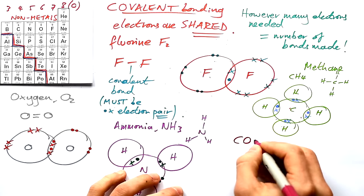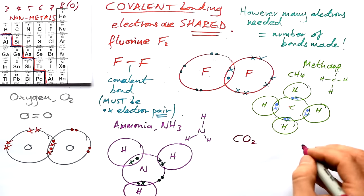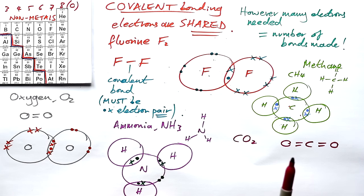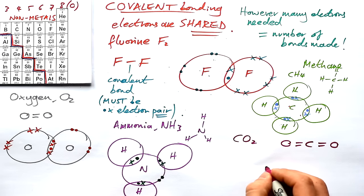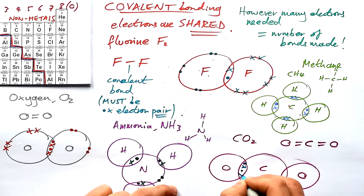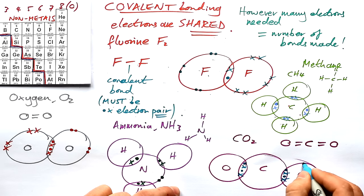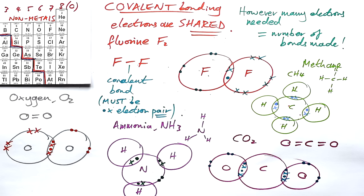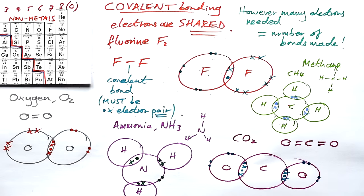Let's do carbon dioxide, CO2. Carbon is in group four so it needs four bonds; oxygen is in group six so it needs two bonds. So the skeletal formula is a carbon in the middle with a double bond to each oxygen — that satisfies both. In the dot and cross diagram we have two pairs of dot-cross electrons on each side. Carbon ends up with eight electrons; both oxygens also get full outer shells. The trick is: after drawing your dot and cross diagram, always check that each atom has a full outer shell.